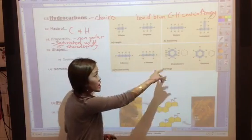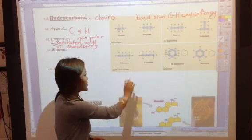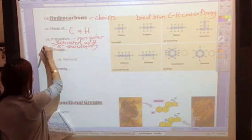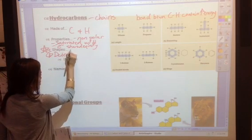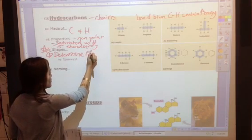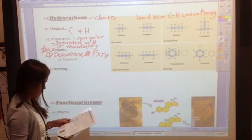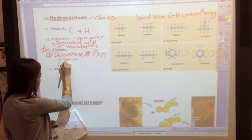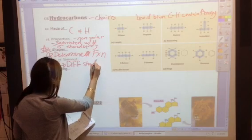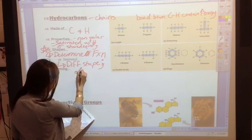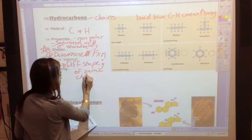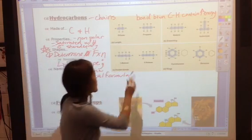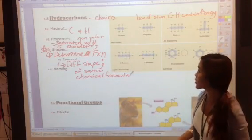They can be a straight chain, they can have some branching, they can have rings, they can have double bonds that are forming between those carbon molecules. And so the shapes, a very important thing for us to remember is that shape helps to determine function. Now, another thing we need to know about these hydrocarbons is that they can have isomers of each other. And an isomer is a different shape of the same chemical formula.